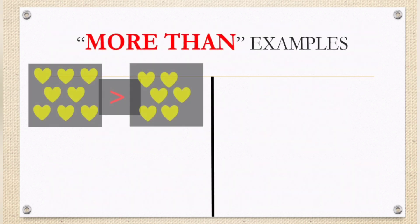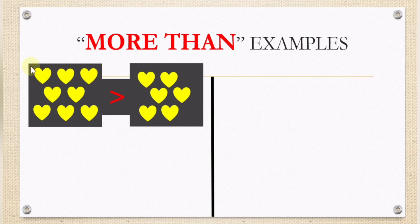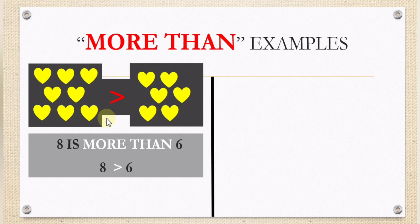More than examples. There are one, two, three, four, five, six, seven, eight hearts in the first box. In the second box, how many hearts? One, two, three, four, five, six. If we are going to read it: eight is more than six. Or it can be written as eight is more than six. Why? Because eight is a greater or bigger number compared to six.